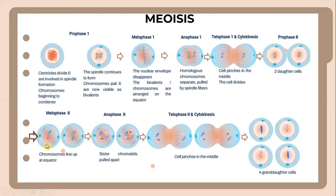When it goes to metaphase two, the chromosomes line up at the equator. During anaphase two, sister chromatids are pulled apart — you can see from the diagram they are separating. When it comes to telophase two and cytokinesis, the cell pinches in the middle. Finally, at the end of the meiosis process, there is the establishment of four granddaughter cells.